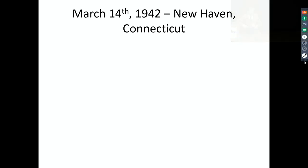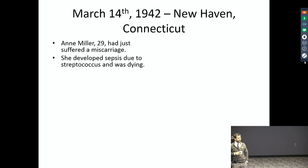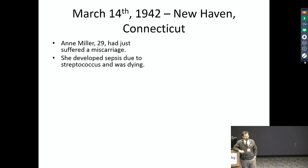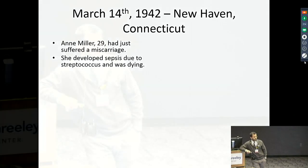The story really breaks open in 1942. There was a young woman who had had a miscarriage, and after her miscarriage she developed sepsis from strep. Before we had antibiotics, things like this would develop over weeks. People would have fevers for days to weeks while their immune systems fought. In her case, she was losing the battle — fevers of 106 every day — and they didn't think she was going to make it.